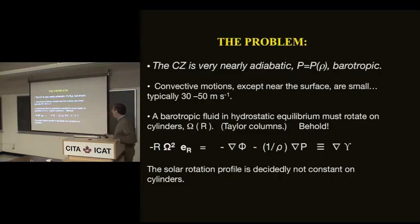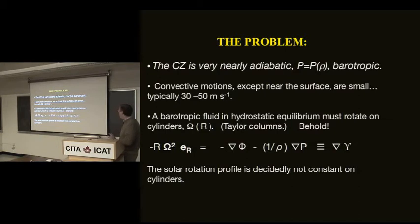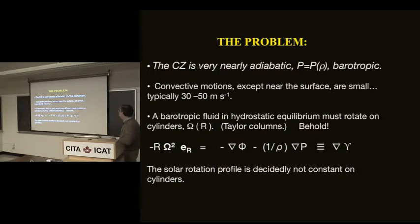Here's the problem formulated mathematically. The convective zone is very nearly adiabatic. If it were exactly adiabatic, P would be a function of rho only — that's a barotropic equation of state. The dynamics of a barotropic equation of state are very restricted. The convective motions themselves, except very near the surface where they can approach sonic velocities, are typically very small — 30 to 50 meters per second. Near the tachocline, they're just a few meters per second, slower than an Olympic racer can run.